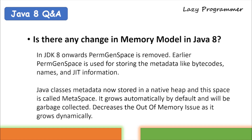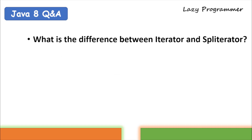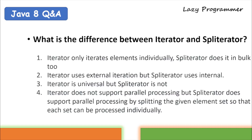Another question could be: what is the difference between Iterator and Spliterator? Iterator iterates elements individually; Spliterator can do it in bulk too. Iterator uses external iteration; Spliterator uses internal iteration. Iterator is universal; Spliterator is not. Iterator does not support parallel processing, but Spliterator does — it was introduced in Java 8 and supports parallel processing by splitting the given element set so each subset can be processed individually.